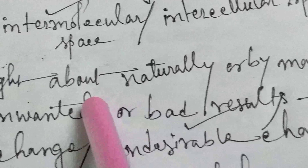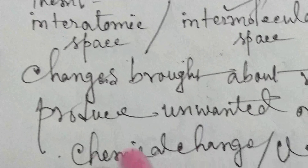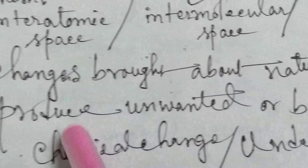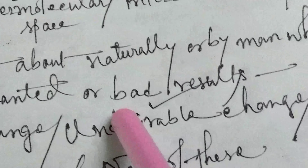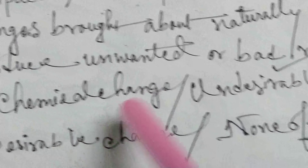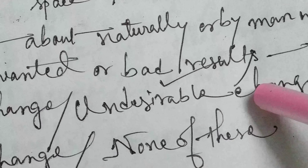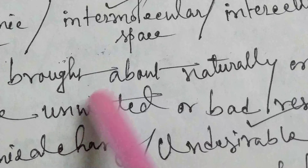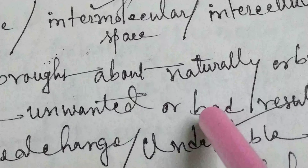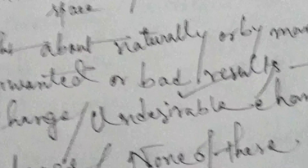Changes brought about naturally or by man which produce unwanted or bad results — this is what type of change? Chemical change, undesirable change, desirable change, or none of these. The answer is undesirable change, because this type of change is basically not beneficial to human beings.